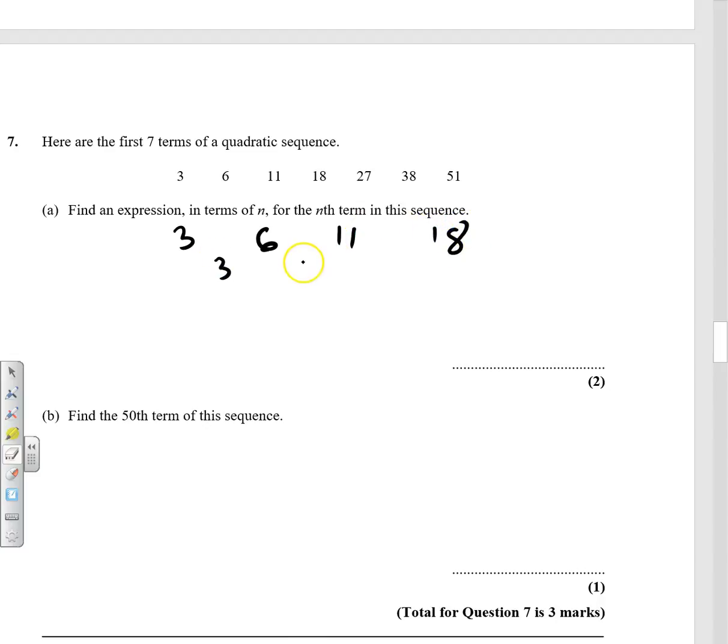So we've got 3, 5, 7, and the next one is going to be 9. So that's the first difference. They're all different, so it's not linear, but we knew that. The second difference is 2.